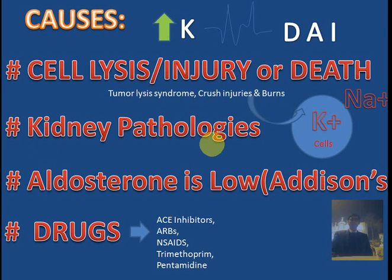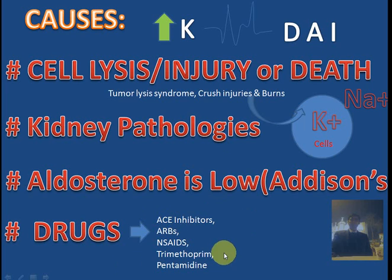Next is aldosterone. Aldosterone's main function is to increase resorption of sodium and to excrete potassium out of the body. In any condition that leads to deficiency of aldosterone, like Addison's disease, if there is low aldosterone, potassium is not excreted — it is retained in the body and there is hyperkalemia. Finally, there are drugs: ACE inhibitors, angiotensin receptor blockers, NSAIDs, antibiotics like trimethoprim, and antiparasitic agents like pentamidine. These drugs cause hyperkalemia, so if there is a kidney pathology and you give these drugs, there is a very good chance the patient will develop hyperkalemia.